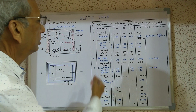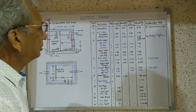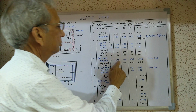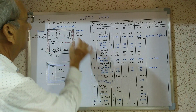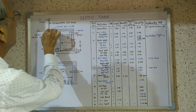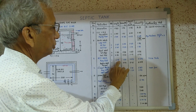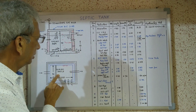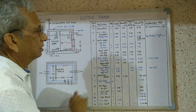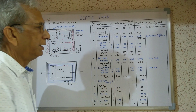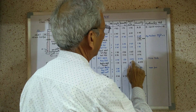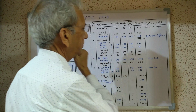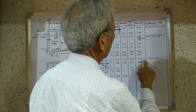Now we take RCC work. First is the roof slab — one number. Size: internal size 2 meters plus 20 cm on each wall side giving 2.40 meters length. Width: internal size 90 cm plus 20 cm on each side giving 1.30 meters. We do not apply the long wall short wall method here. Thickness of slab is 7.5 centimeters (0.075 m). Result is 0.234 cubic meters.